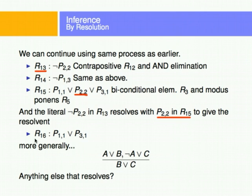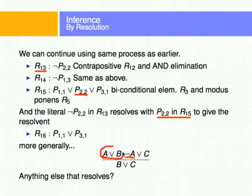More generally, if you have some variable OR some other variable, and any one of the variables in the OR is negated in another expression, you eliminate that variable and OR the two remaining variables. If you have some OR and another OR such that the second OR contains the complement of one of your variables, that variable goes away and you just OR the remaining variables. So we can see if there's anything else that resolves, and continue resolving.